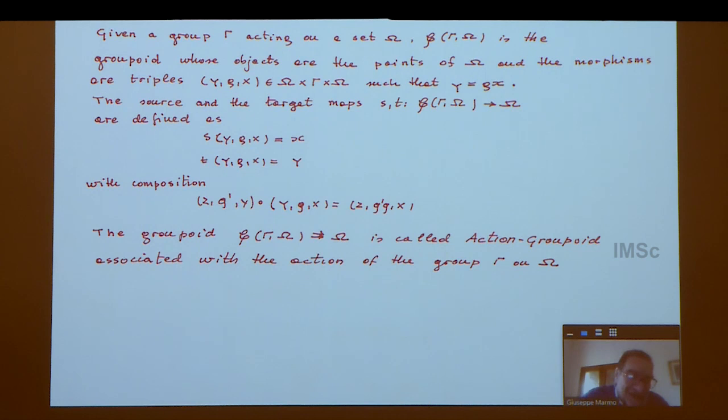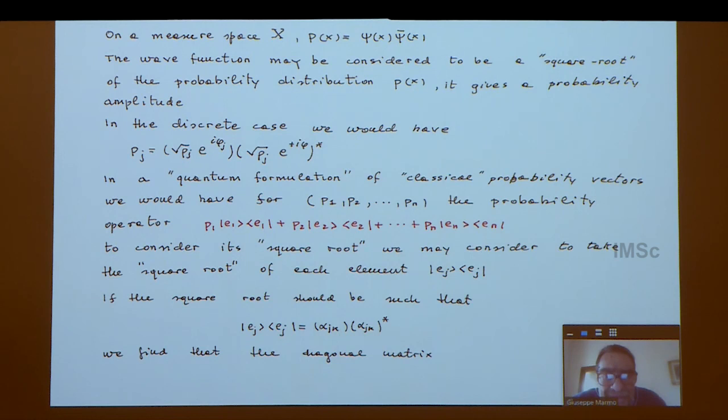You can see the definition here. Now that you have an action groupoid, the dynamics can be written on the action groupoid. I will show how general and useful the notion of groupoid is by showing how the groupoid emerges naturally if you go from probabilities to probability amplitude. Next, please.